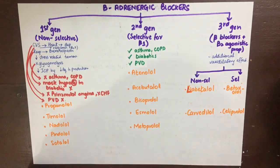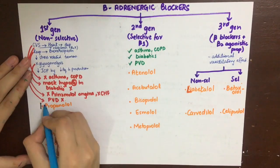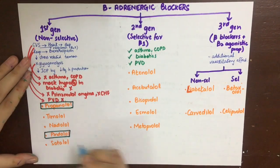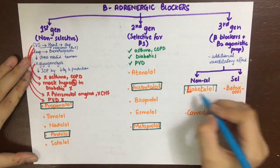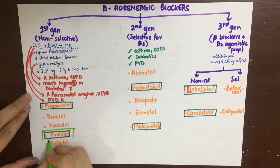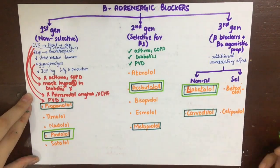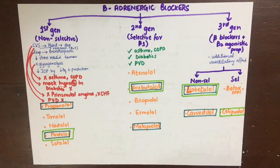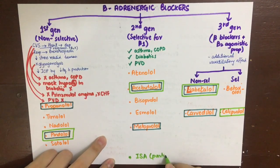Some of these drugs have a membrane-stabilizing effect with quinidine-like properties, allowing them to act as anti-arrhythmics; these include propranolol, pindolol, acebutolol, metoprolol, labetalol, and carvedilol. Others have intrinsic sympathomimetic activity, meaning they are partial agonists at adrenergic receptors and can mimic epinephrine and norepinephrine effects, increasing blood pressure and heart rate; these include pindolol, acebutolol, labetalol, and celiprolol.